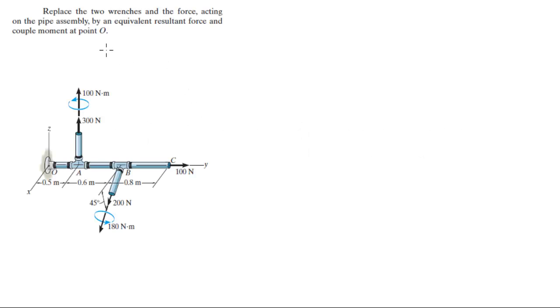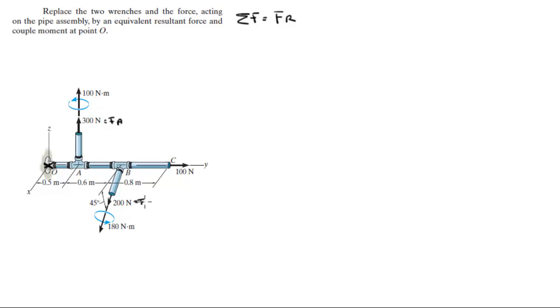For more videos visit forthesakeofducation.com. Let's do this problem: replace the two wrenches on the force acting on the pipe assembly by an equivalent resultant force and couple moment at O. There are two things we need to find. Let's call the 300 N force F_A, the 200 N force F_B, and the 100 N force F_C.